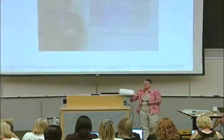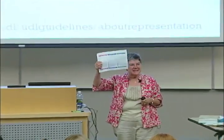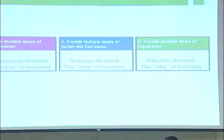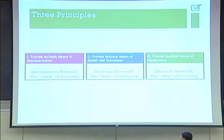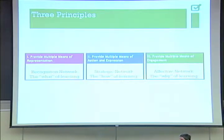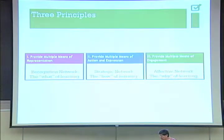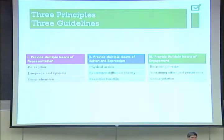We're going to spend a few moments deconstructing this document so you'll feel comfortable navigating on your own. At the principle level there are three principles, tightly connected to what David talked about with the neurosciences: multiple means of recognition — the what of learning; multiple means of action and expression — the how of learning; and multiple means of engagement — the why of learning. From the principles we go to the guideline level, and under each principle there are three guidelines.